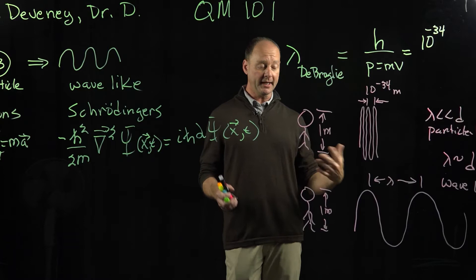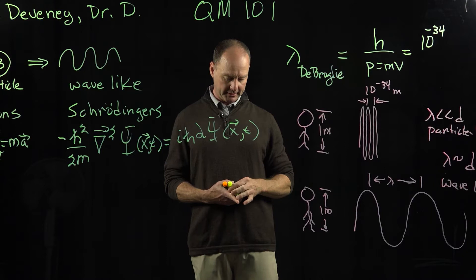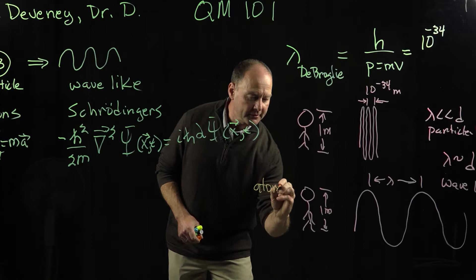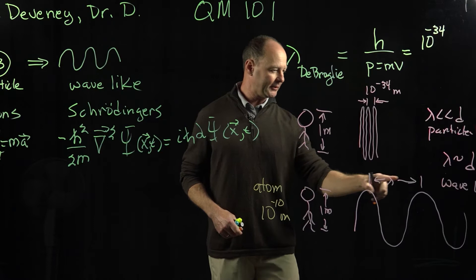However, if you're an atom, the scale of the atom is about 10 to the minus 10 meters, and an electron has a de Broglie wavelength of 10 to the minus 11 meters.